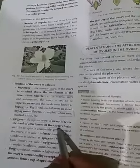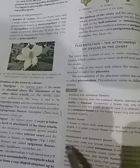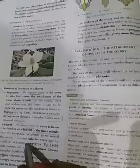In epigyny, the ovary is called the inferior ovary. If the ovary is below the level of attachment of the other 3 whorls and the receptacle completely grows around the ovary, this condition is called the inferior ovary. The condition is known as epigyny and the flowers are called epigynous flowers. Examples are sunflower and cucumber.